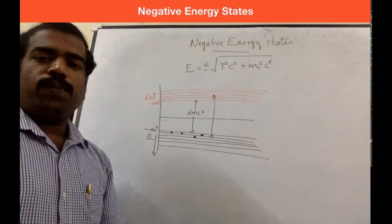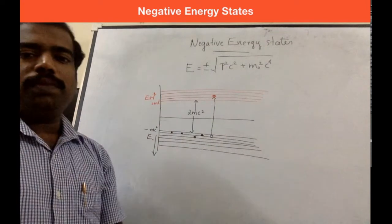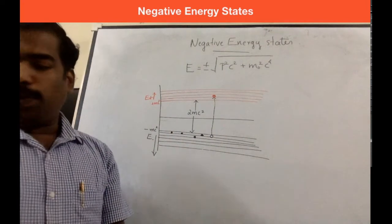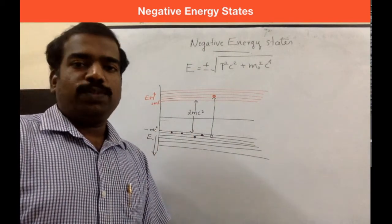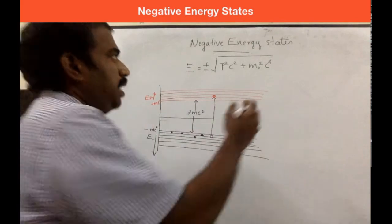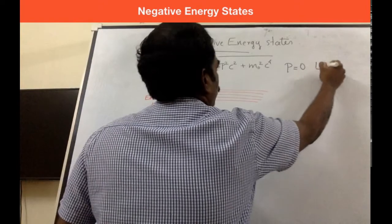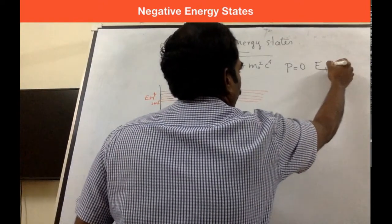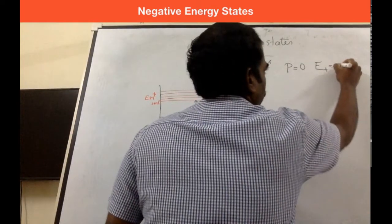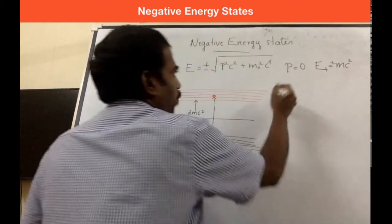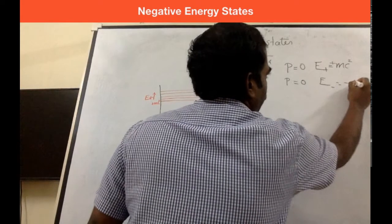This will be minimum energy when the momentum is zero. When momentum p equals zero, you can expect two minimum energy values. The first one, E plus, is the minimum energy value for the positive energy state, which is plus mc squared. And when p equals zero, you can also expect E minus, which is minus mc squared.